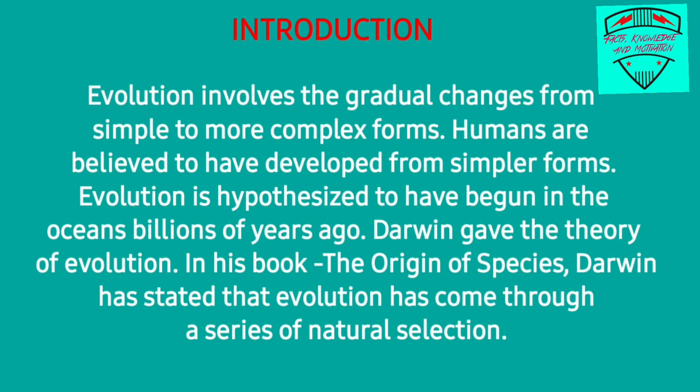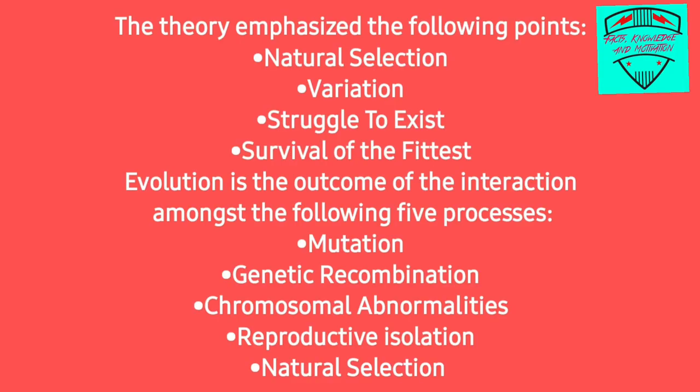Evolution involves the gradual changes from simple to more complex forms. Humans are believed to have developed from simpler forms. Evolution is hypothesized to have begun in the oceans billions of years ago. Darwin gave the theory of evolution in his book 'The Origin of Species', stating that evolution came through a series of natural selection.